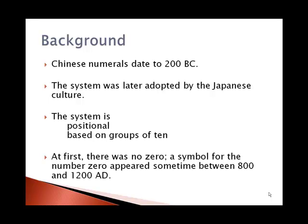The system is positional, that means the order of the symbols does matter and it's also based on groups of ten. Initially there was no zero, but later sometime between 800 and 1200 AD a zero symbol was added.